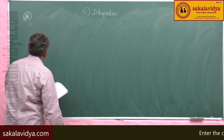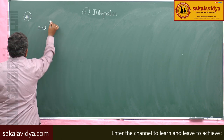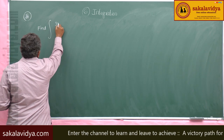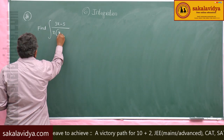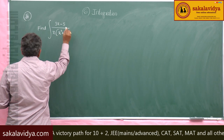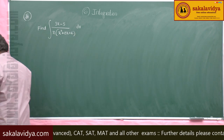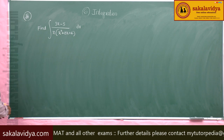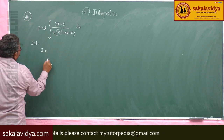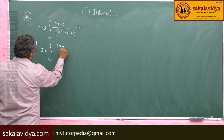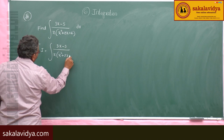Next, solve the problem. Find the integral of (3x minus φ) divided by x(x² + 2x + 4) dx. So I is equal to the integral of (3x minus φ) divided by x into (x² + 2x + 4) dx.